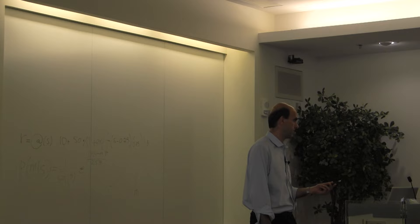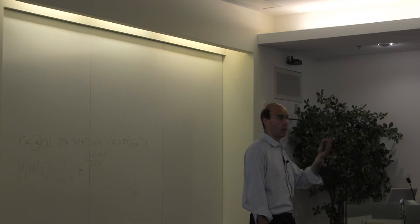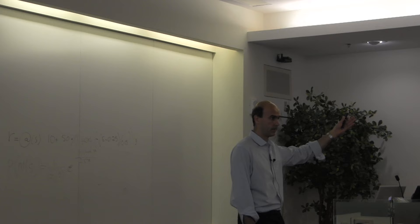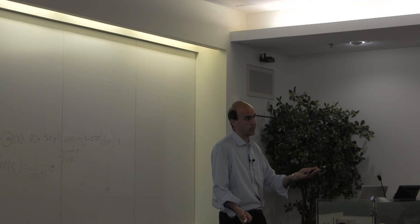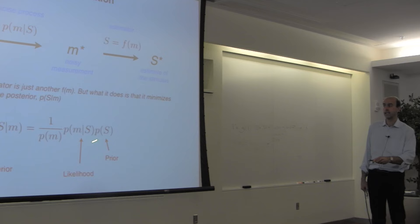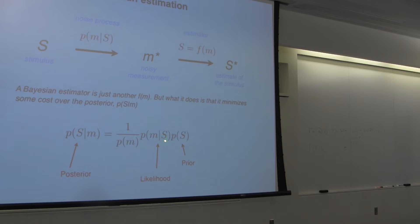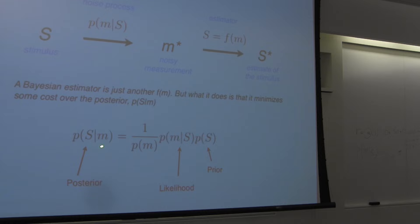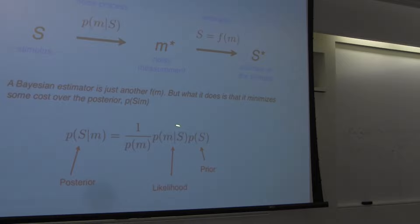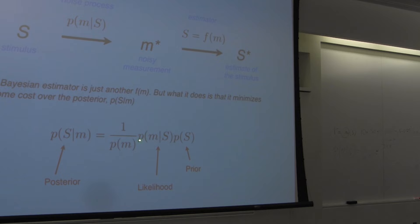You have that prior information, which is independent of your actual measurement. The fact that 2% have the disease has nothing to do with whether you got a positive or negative test result. So those are two independent pieces of information: the prior information and the likelihood information — your measurement or the medical test. You multiply these two together. This is just a normalization factor to make this a probability. You have your likelihood, which we've been working with, and the only thing that Bayesian does is multiply it by what is called the prior distribution.